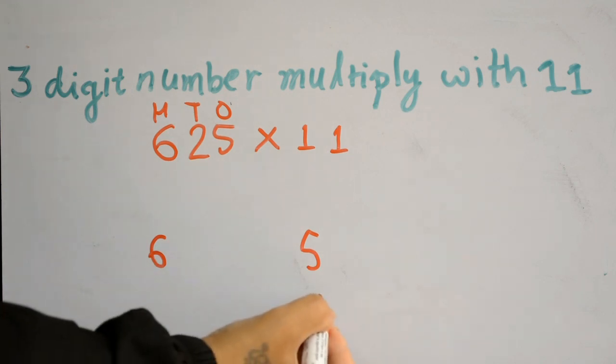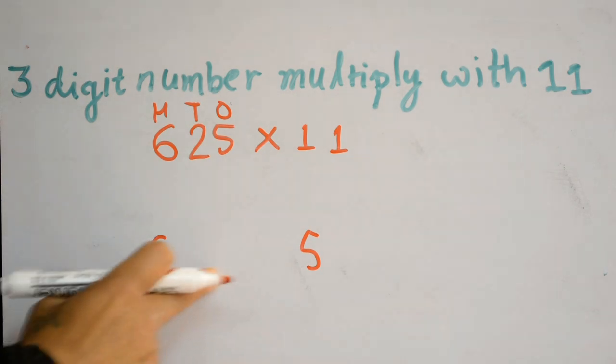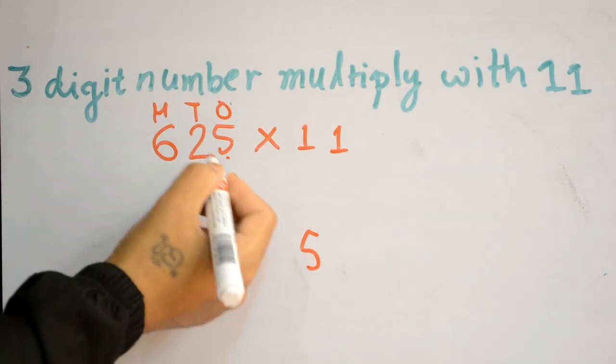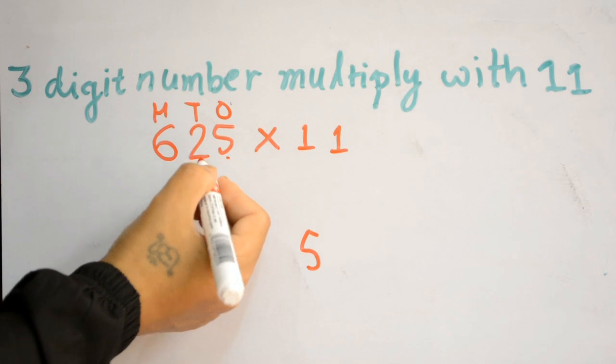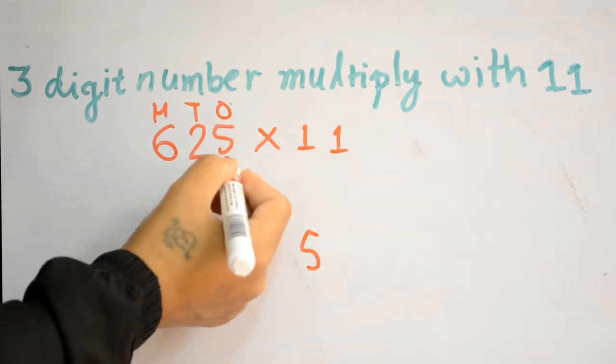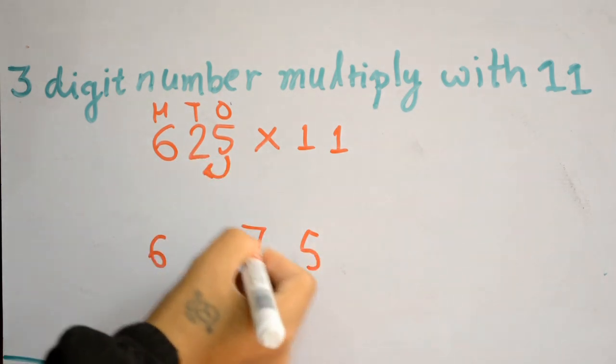...and ones digit. Then how do we write the remaining numbers? At the next step, you add the ones and tens: 5 plus 2 is 7. Then add tens and hundreds: 2 plus 6 is 8.